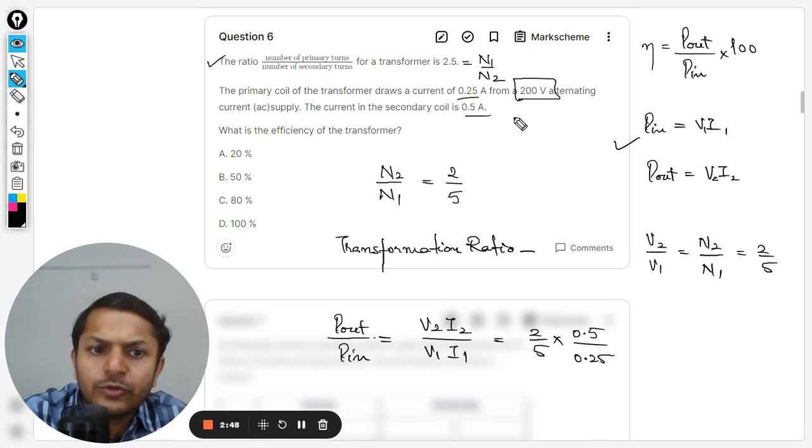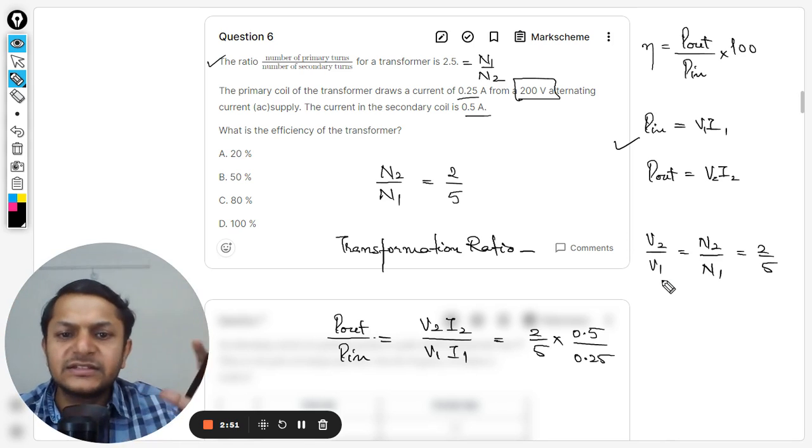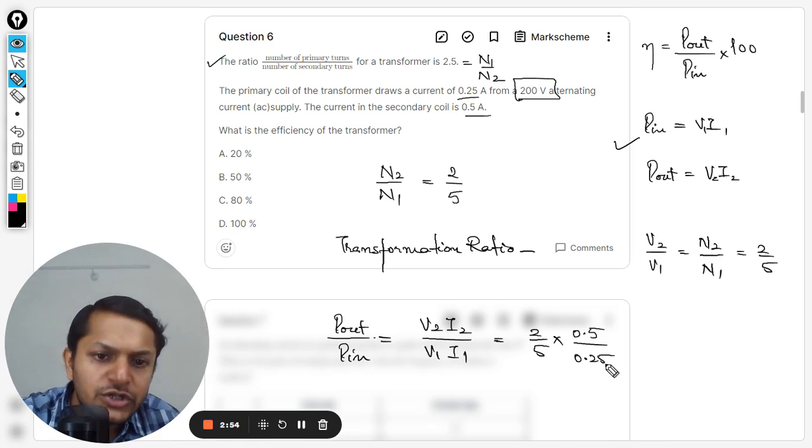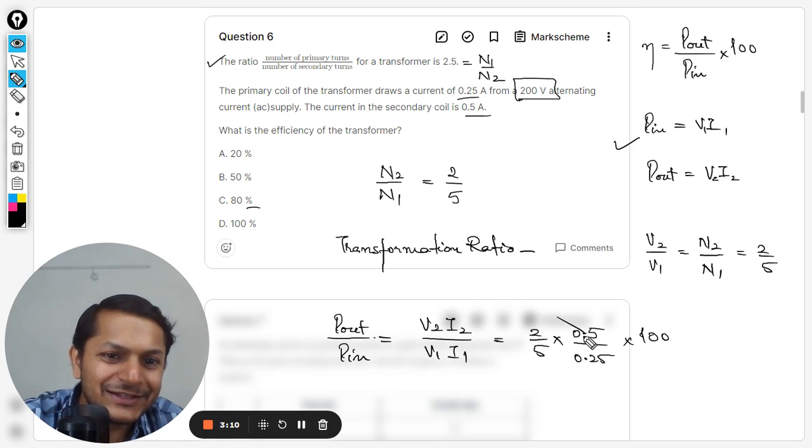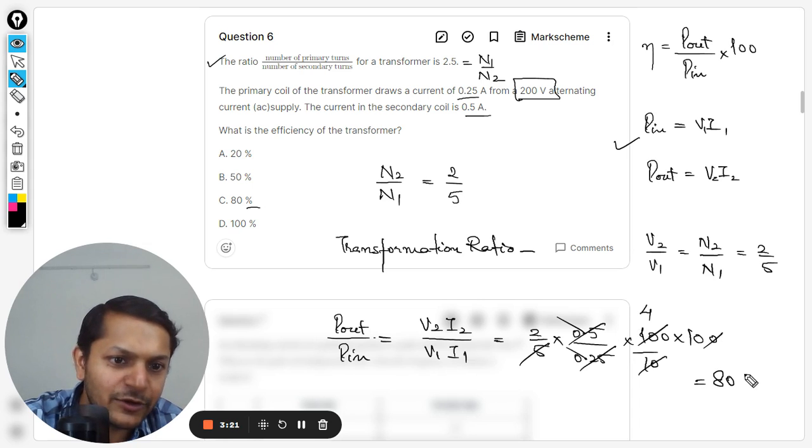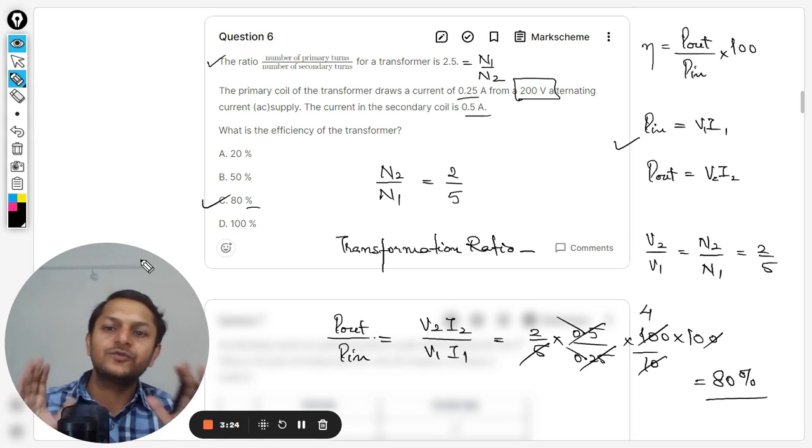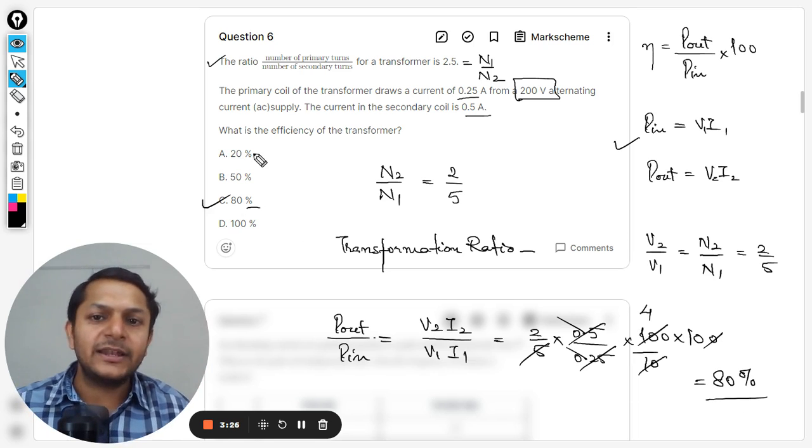Even this voltage is given, so we could have found the secondary voltage also by using this formula, but I have directly replaced the ratio there. From here I think we would be getting the answer. Definitely we would be multiplying 100 also because we want the answer in percentage. So this decimal is removed, 5 and 5, multiplying 100 again, this decimal is removed, so that will be 4, and this is cancelled, so it is coming out to be 80.